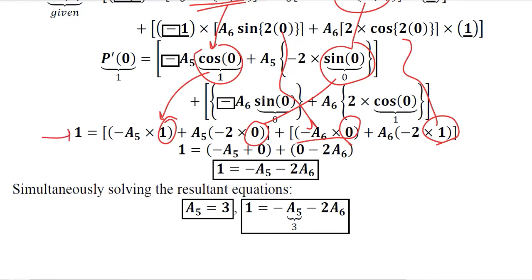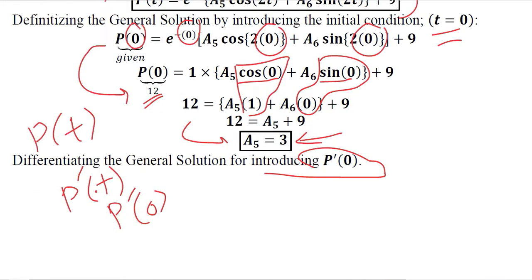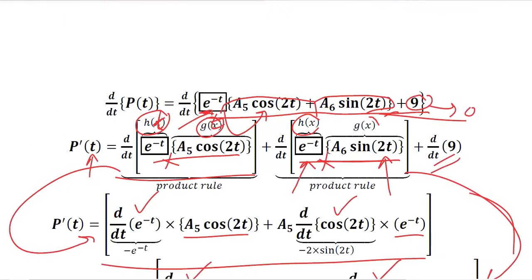After simplifying this we get this expression which has these terms, and we can get rid of these zeros to let us have this term. This actually is an equation in terms of A5 and A6. Previously we have found the value of A5. Here it is equal to 3. So we can use this value to find the value of A6, which is... So we have A5 and A6.